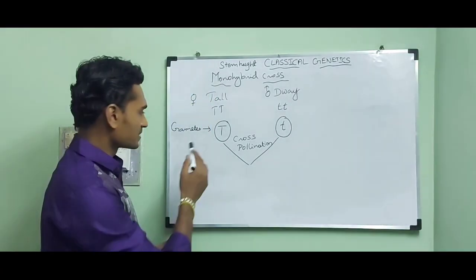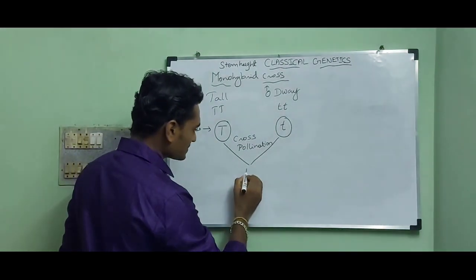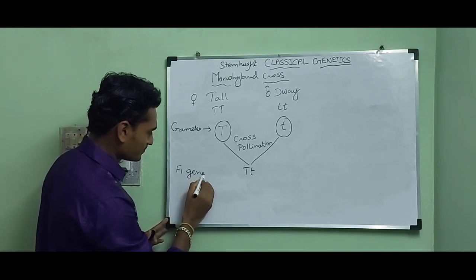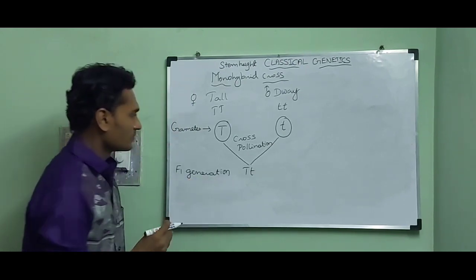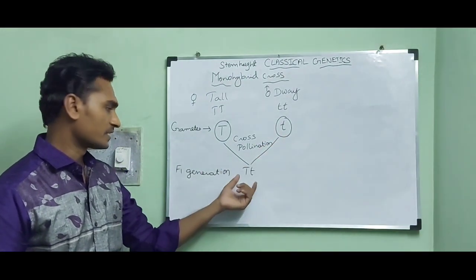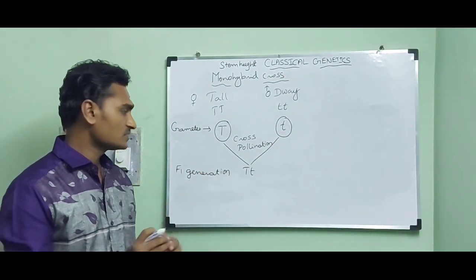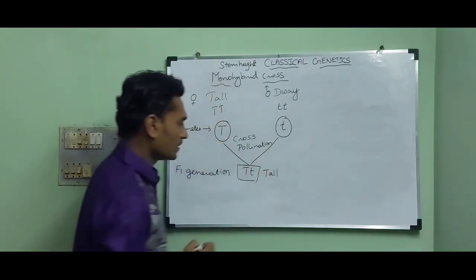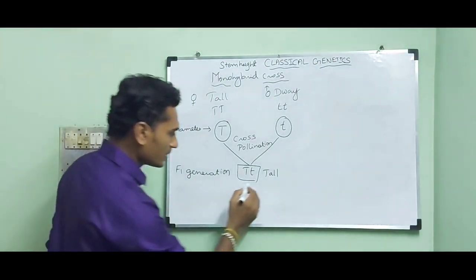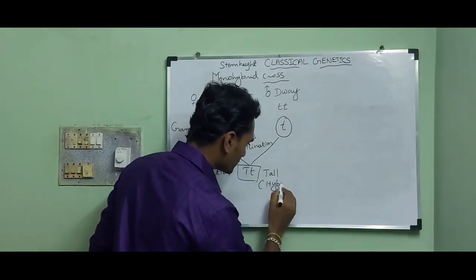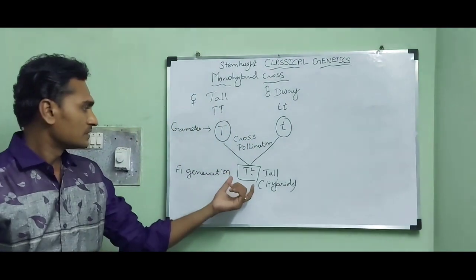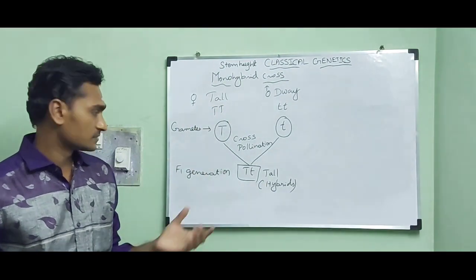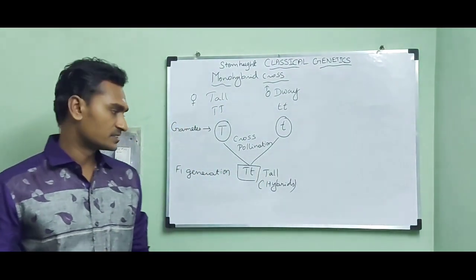Fertilization takes place and forms the F1 generation. In F1 generation, all the offspring are tall, and they are said to be hybrids, because all the offspring differ from both the parents.